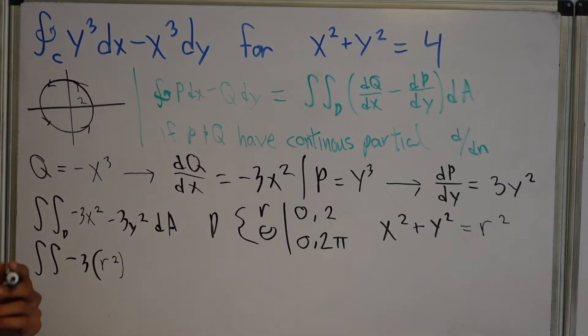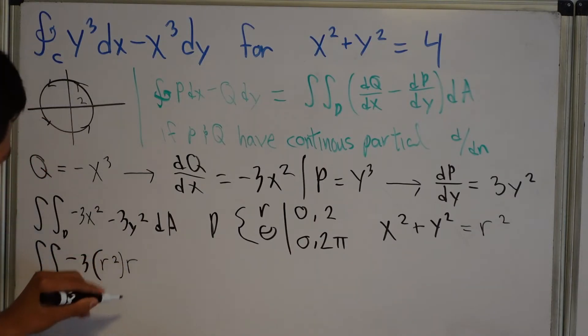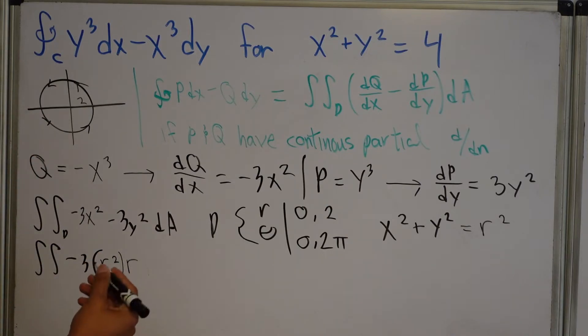So I'm going to put R squared here. And then, since we're changing, we're transforming into different planes, we have our Jacobian, which is R. And we have, not bad, I'll go right-handed here.